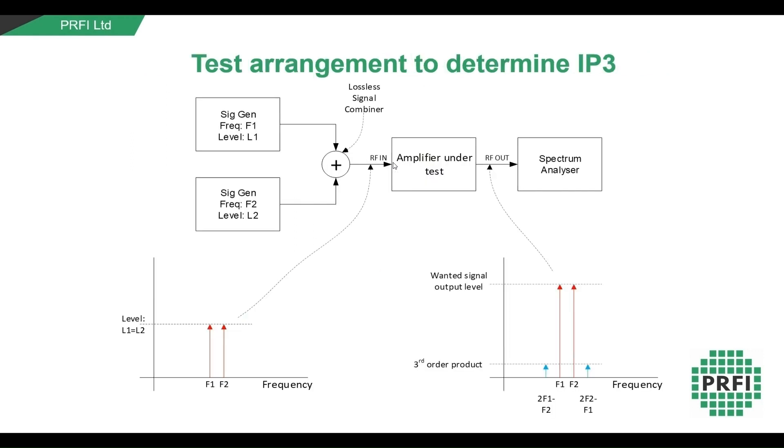IP3 is measured by applying two equal level, unmodulated signals from two signal generators to the input of the circuit and observing the output level on a spectrum analyzer as the input levels are varied. The frequencies of the two signals are close together and often within the channel bandwidth of the system.